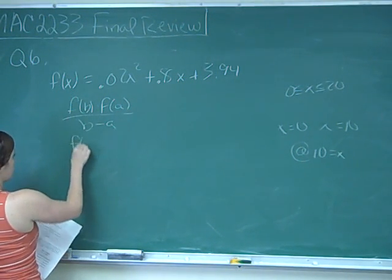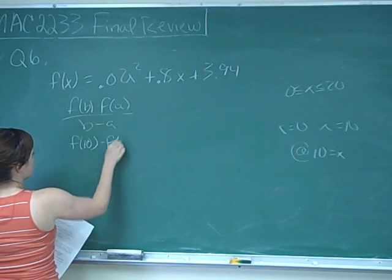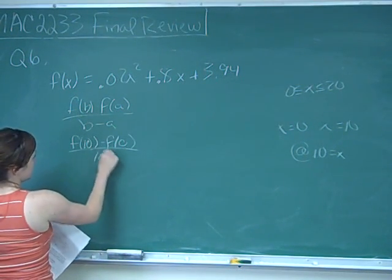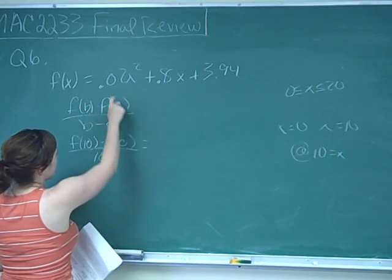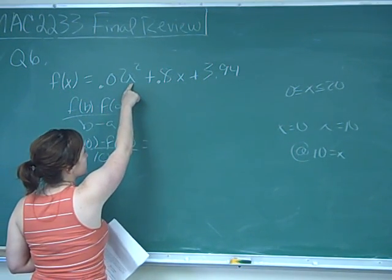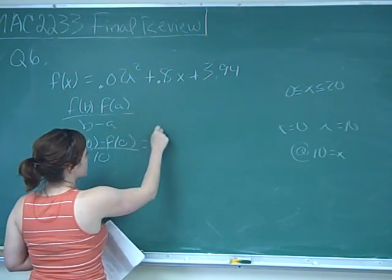For us it's going to be f of 10 minus f of 0 all over 10 minus 0, which is 10. f of 10, we've got 0.02 times 10 squared, 10 squared is 100, times 0.02 is 2.